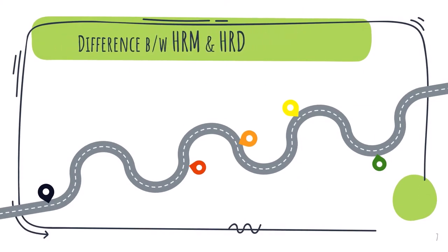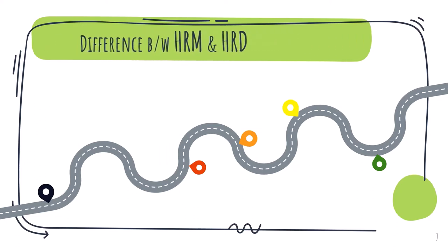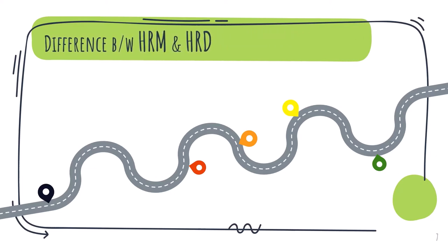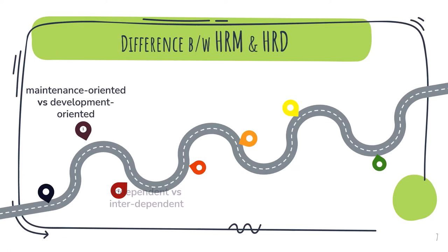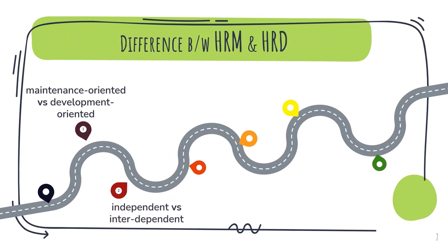HRD and HRM are both very important concepts of management specifically related to human resources of any organization. While they have a lot in common, they also have different roles. First, HRM is mainly maintenance-oriented — focused on actions of management that help preserve relationships in an organization — whereas HRD is development-oriented, geared toward achieving the best possible performance with employees and reaching organizational goals. Second, in organizational structure, HRM is independent, whereas HRD creates a structure that is interdependent and interrelated.